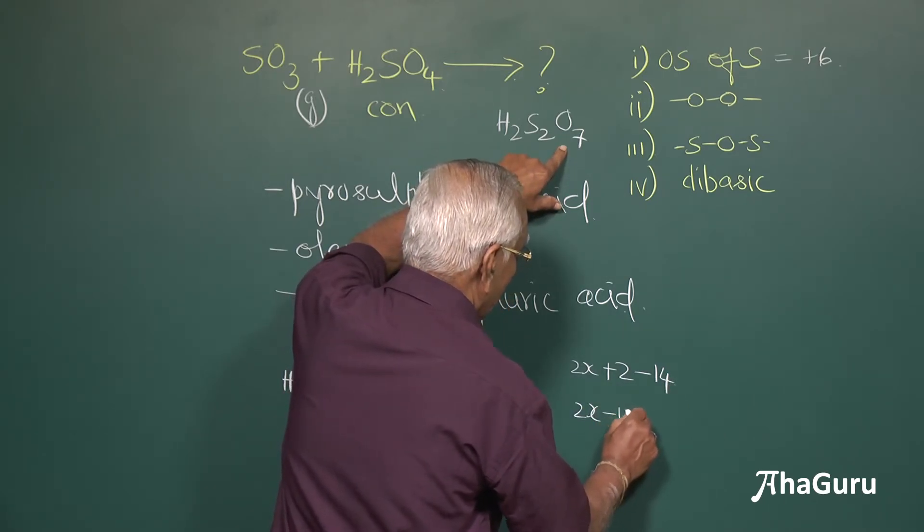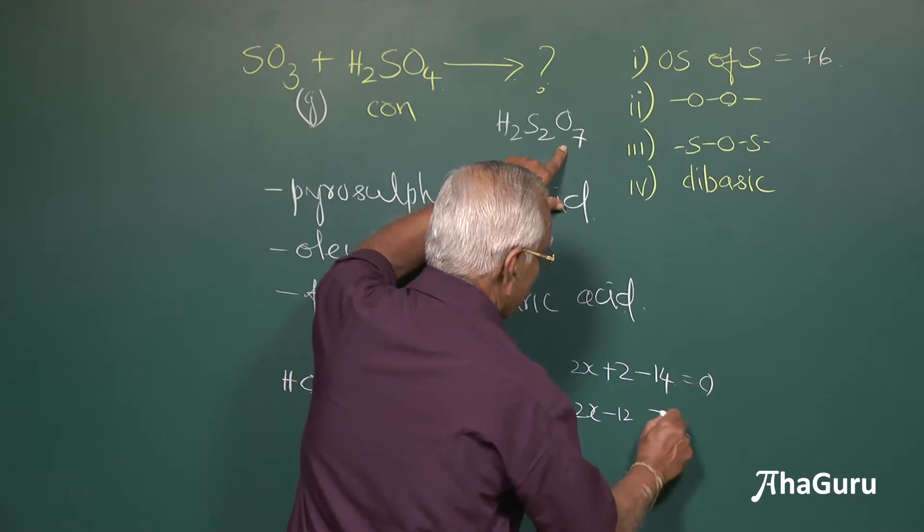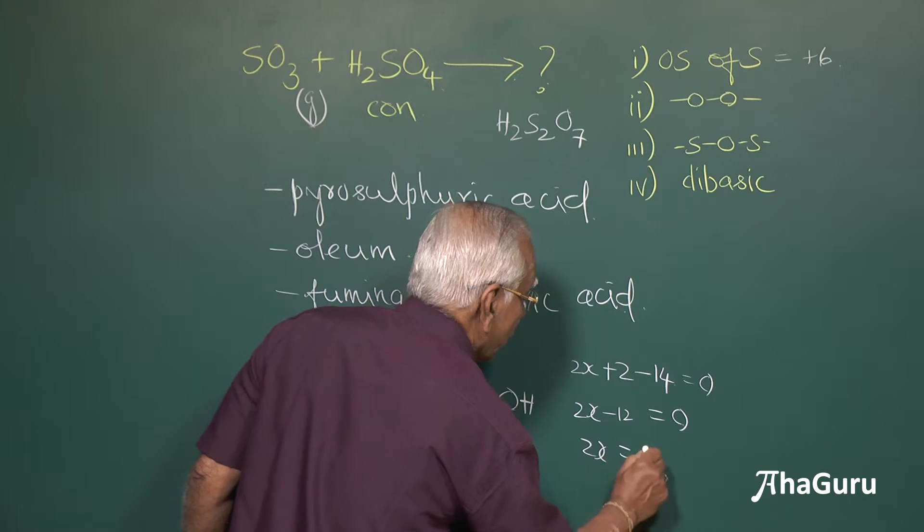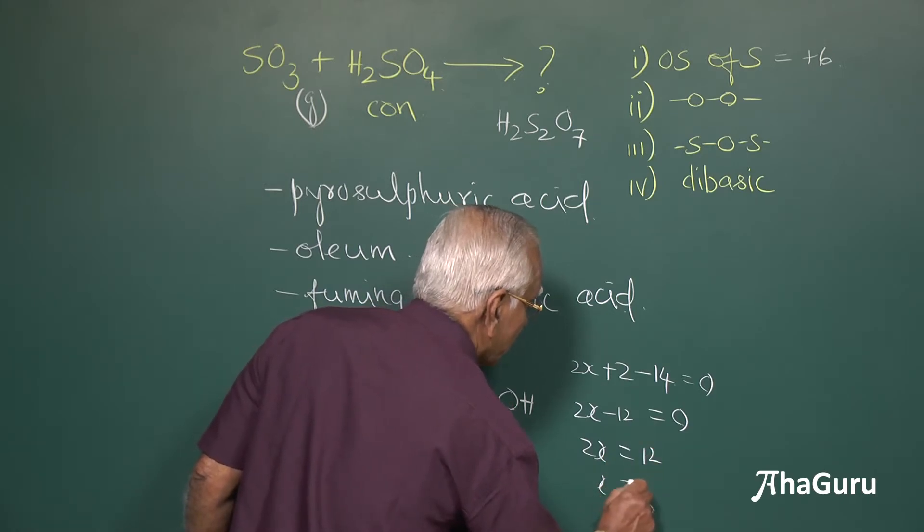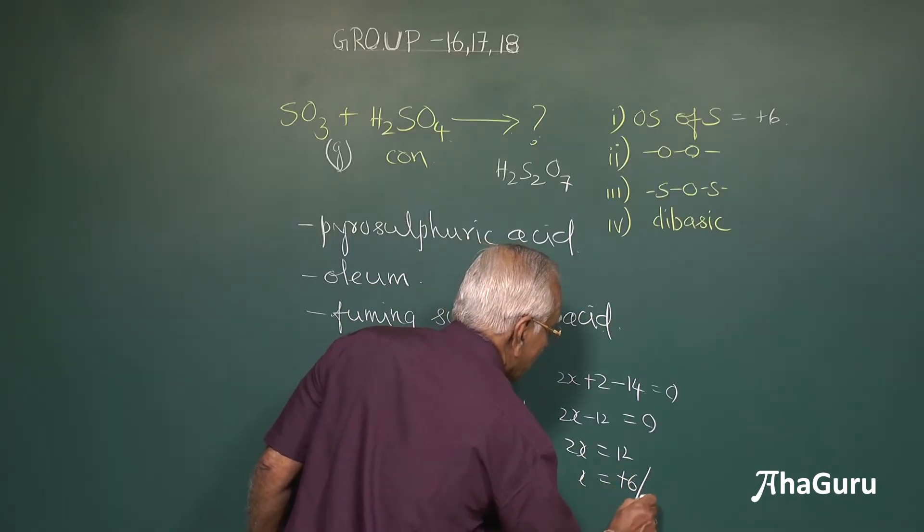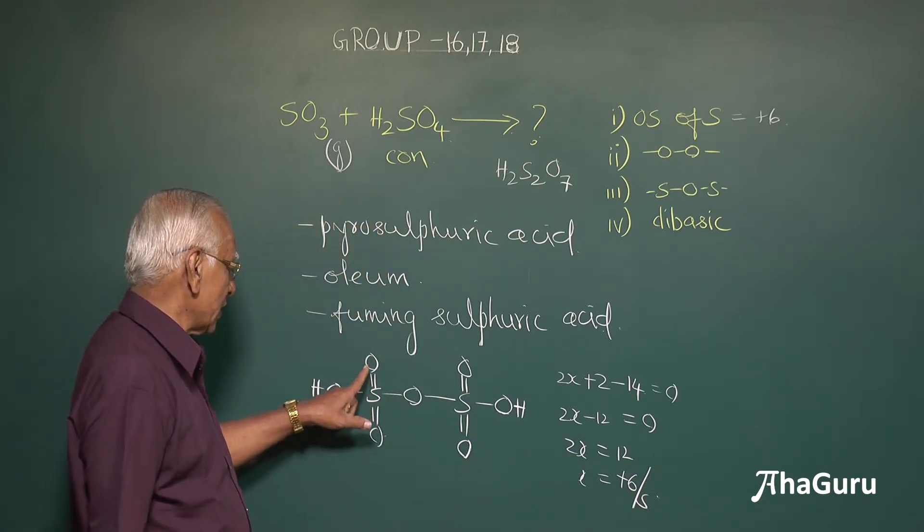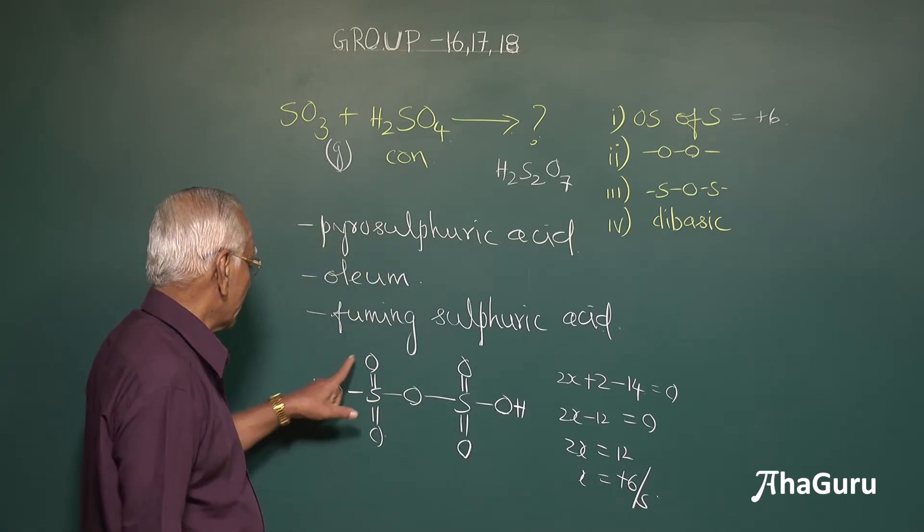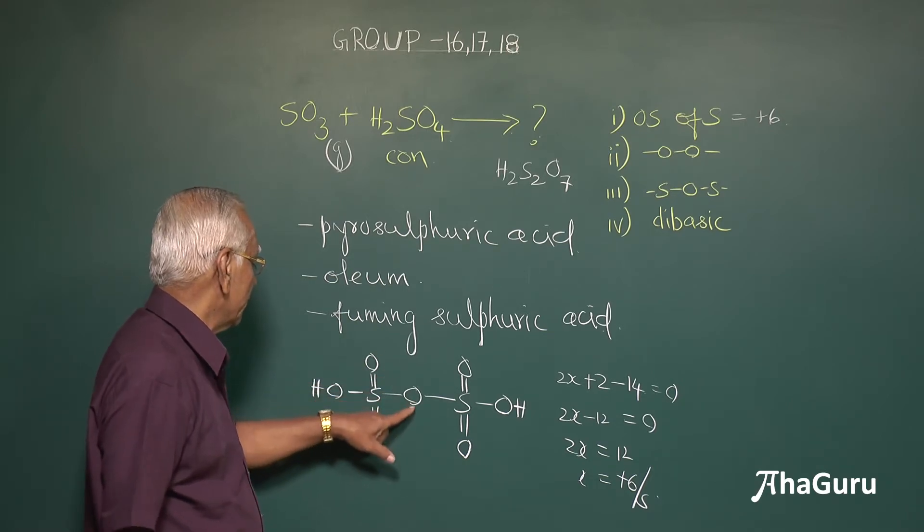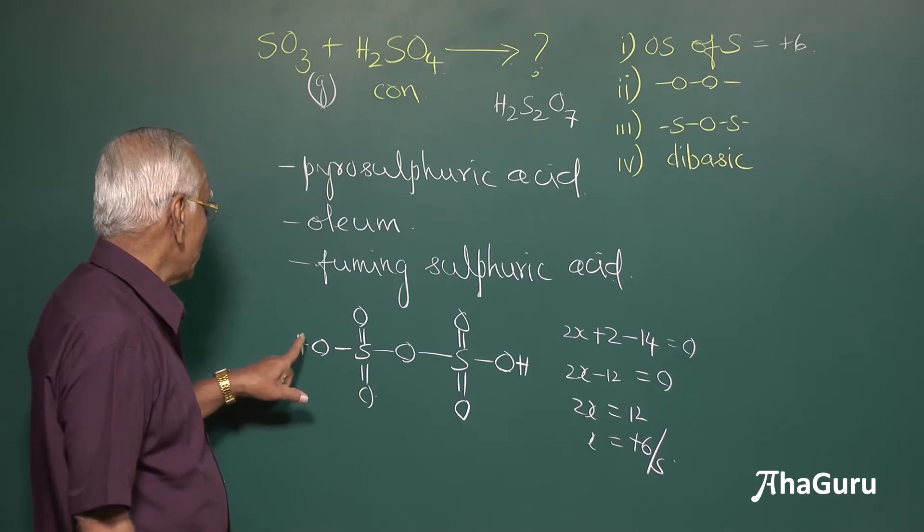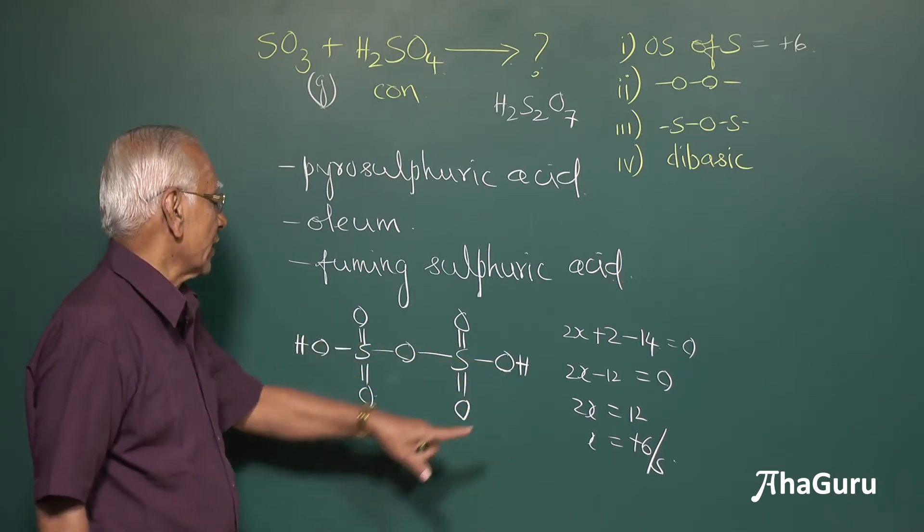Therefore, 2x minus 12 equal to 0, the entire molecule is neutral. Therefore, 2x is equal to 12 here and x is equal to plus 6 per sulfur, per sulfur. Therefore, this is going to be plus 6 here and they are surrounded by 4 oxygen atoms minus 2, minus 2, minus 2, plus 1 and plus 1 there.